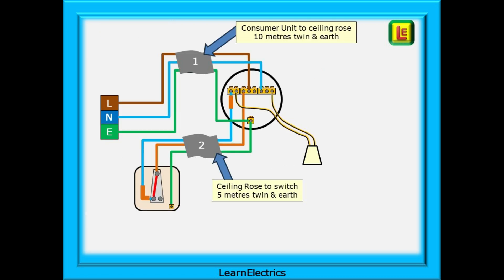Shown here is the basic one-way lighting circuit using the three plate method. Shown is cable number 1, the 10 meter loop cable from the CU to the ceiling rows, and cable 2, the 5 meter switch cable between the ceiling rows and the light switch.